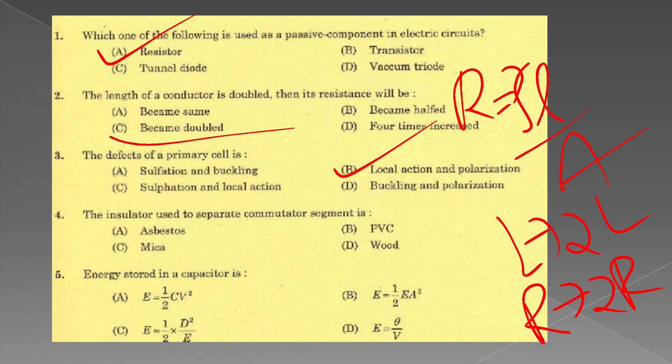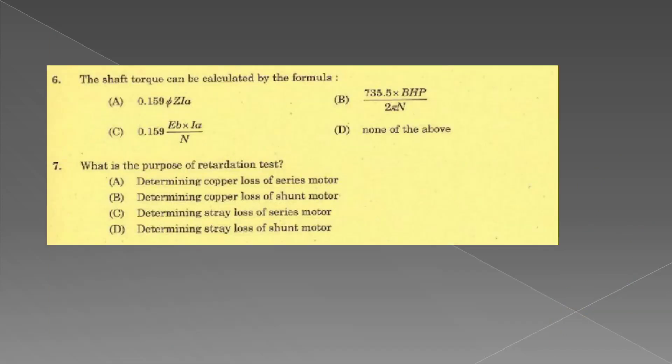Insulator used to separate commutator segments. Energy stored in capacitor. The shaft torque can be calculated by the formula 735.5 into BHP divided by 2 pi n.